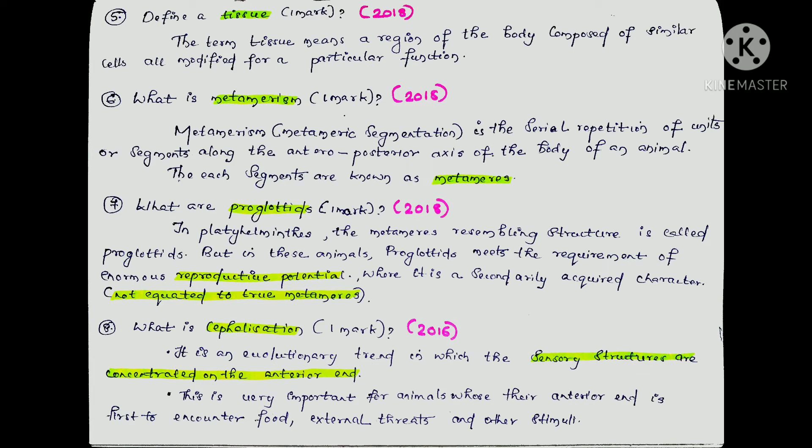The next question is: define a Tissue. This was defined in 2018. A tissue means a region of the body which is composed of similar cells, all modified for a particular function. The cell is the basic building block, and a tissue is a region of similar cells all modified for a particular function.